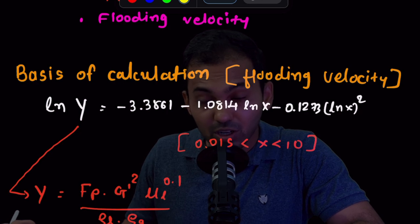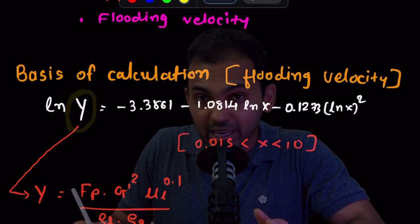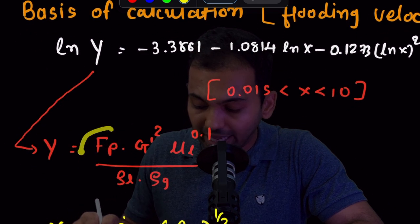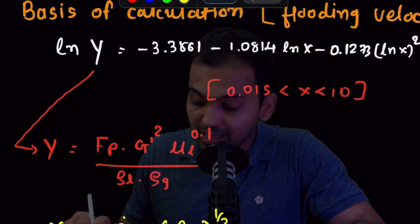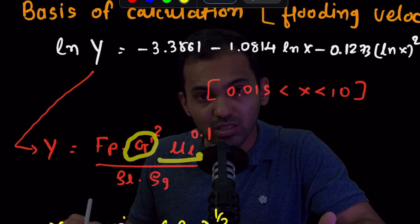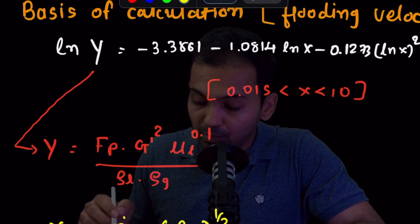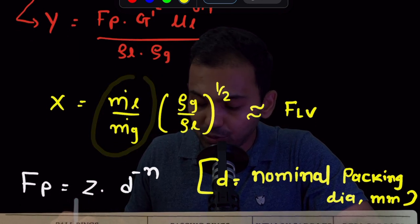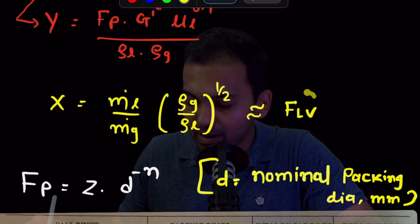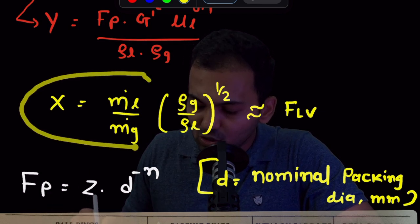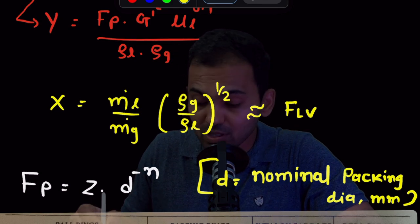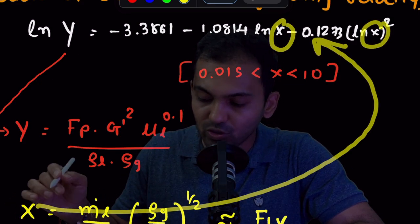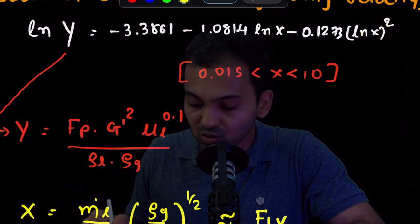If we solve this equation, we can find the actual Y value. Y is a constant that combines many parameters together. As you may see here, Y represents the packing factor — which depends on the different size of material — then mass velocity G', viscosity of the liquid solvent being used, and densities of liquid as well as gas. X is the flow parameter, which is the mass flow rate ratio of liquid to gas, multiplied by the square root of density ratio — raised to 1/2 — which is the flow parameter we have discussed in previous videos.